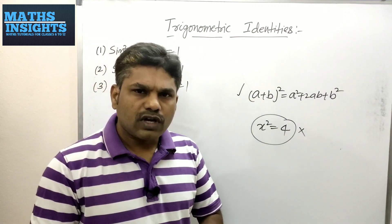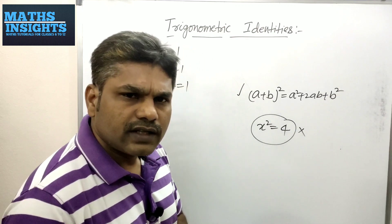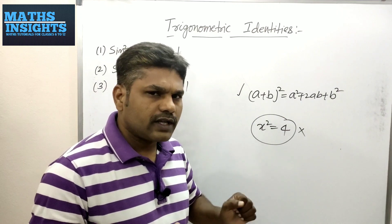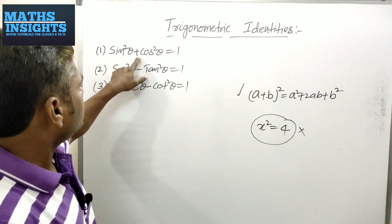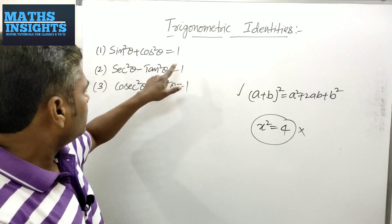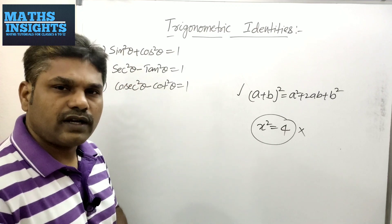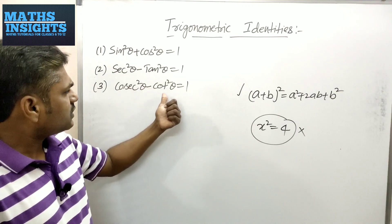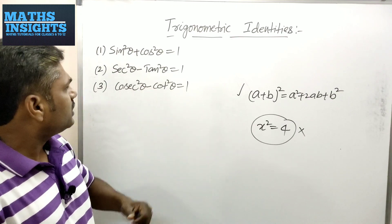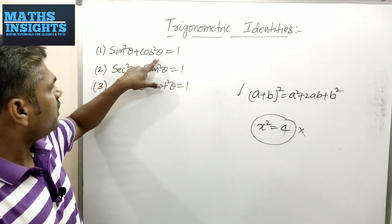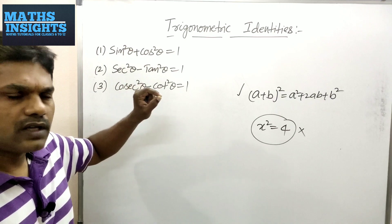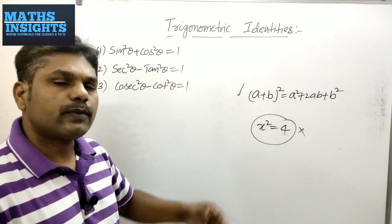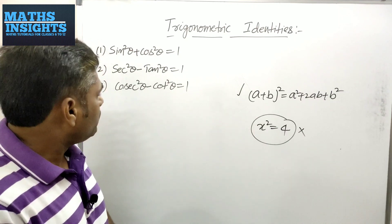Therefore x² = 4 is not an identity. Now coming to our identities — there are three trigonometric identities, and as I said these are very important. The first one is sin²θ + cos²θ = 1. The second one is sec²θ − tan²θ = 1. The third one is cosec²θ − cot²θ = 1. Here the variable is θ; whatever values you substitute for θ, you will get 1. That's why these are called identities.